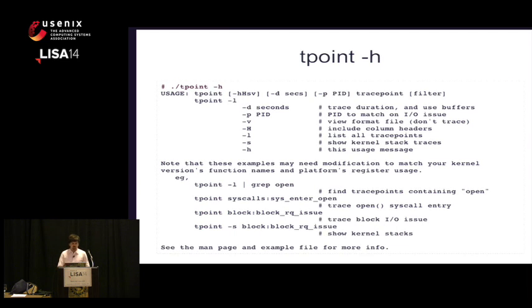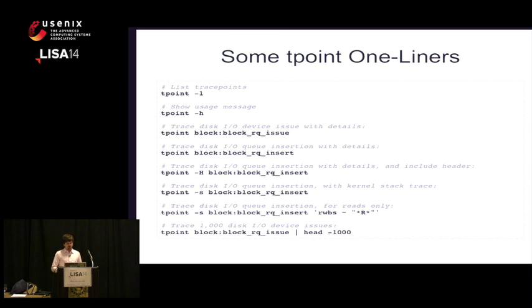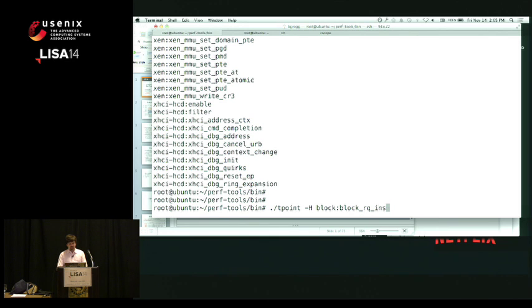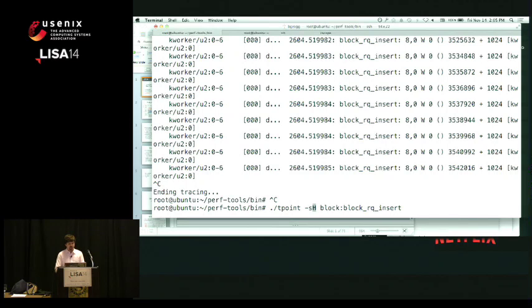On one of the production servers I had 1,200 static trace points in the kernel. tpoint -H shows the usage message. One-liners are great because they are useful — if I showed you a series of one-liners you can copy them, make your own cheat sheet and paste them as needed for disk IO analysis or networking analysis. They're instructive: one-liners teach tool usage by example. I can also do tpoint -S for stack backtraces, which is fantastic. Block RQ Insert is when I'm putting a new disk IO into the queue to be scheduled to disk.